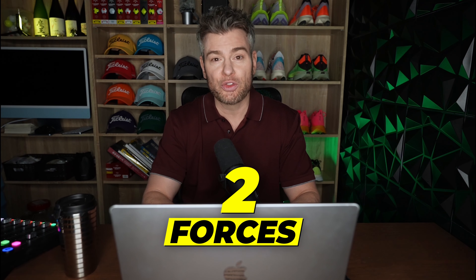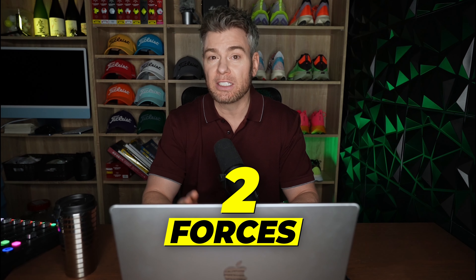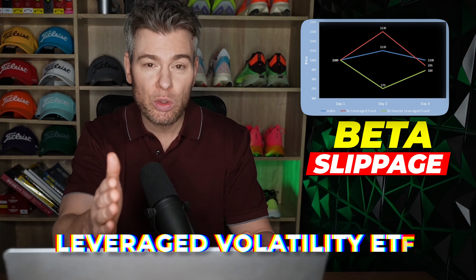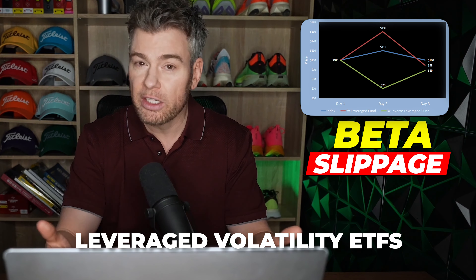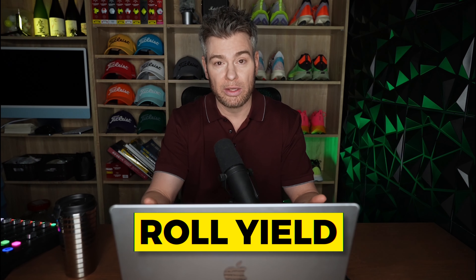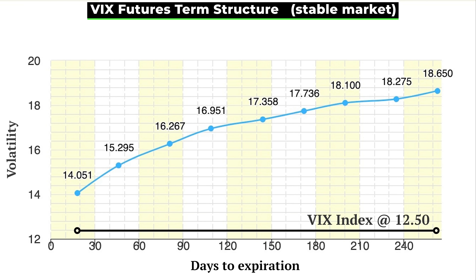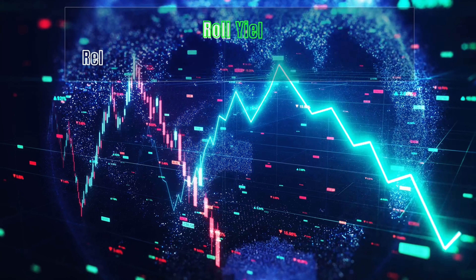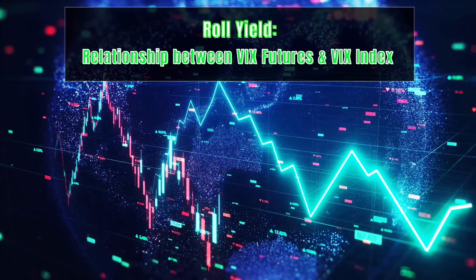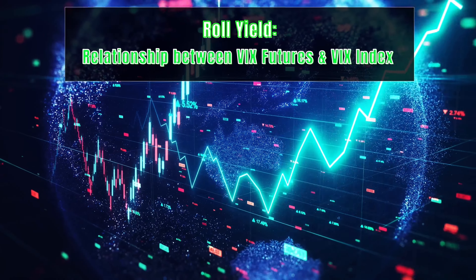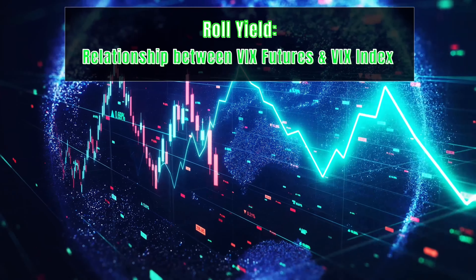There are only two forces driving the price of volatility ETPs. One of them is called beta slippage, but that only affects the leveraged products, so we're going to talk about that one in the next lesson. The main factor for all of them is called roll yield. This is an example of what the VIX Futures term structure looks like in a stable market. You can see the current one every day at vixcentral.com. Simply put, roll yield describes the relationship between the VIX futures and the VIX index itself.